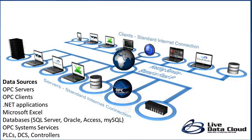With a standard Internet connection, you can host data sources from OPC servers, OPC clients, data from .NET applications — this would be web services, Windows applications, WinForm applications. You can have data come directly from a Microsoft Excel workbook. Data can be obtained from databases like SQL Server, Oracle, Access, and MySQL. Any data hosted in the real-time service of the OPC system service, including the free calculation engine. And also PLCs, distributed control systems, and proprietary controllers can all be connected into the OPC system service as a data source.